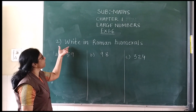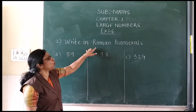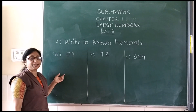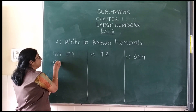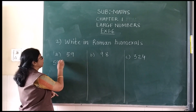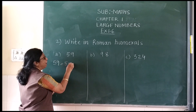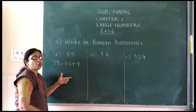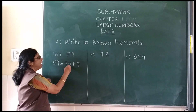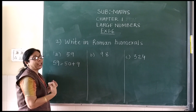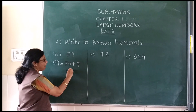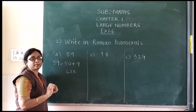Now we will see: write in Roman numerals. What is your first step? You will write the given number in expanded form. Expanded form: 59 = 50 plus 9. What does 50 stand for? L. And 9 stands for IX. So 59 in Roman numerals is LIX.